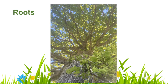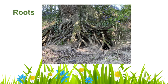Roots help to anchor the plant in the soil so it doesn't fall over. Look upwards into this tree — can you see the branches and the leaves? All of which the roots need to hold in place. If you look at the bottom of the tree, badgers have made their home, which helps us to see the amount and types of root that the tree has in order to stabilise it and collect water and minerals.